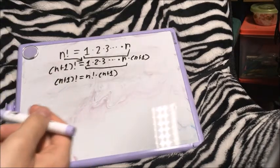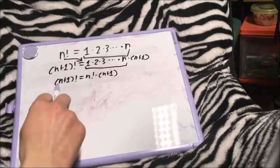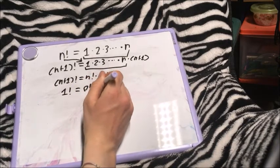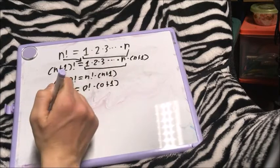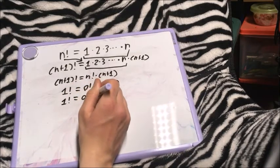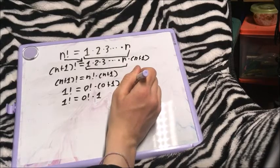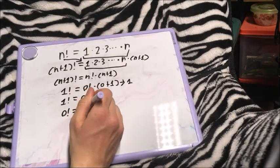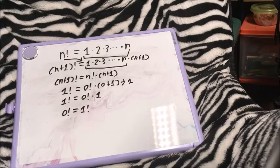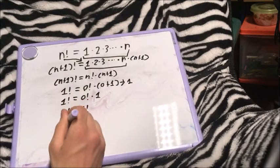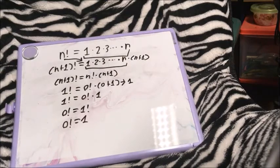To first help with this, we need to establish something important. If we input zero into the recursive formula, we get: 1 factorial equals 0 factorial times (0+1). This simplifies to 1 factorial equals 0 factorial times 1, which simplifies further to 0 factorial equals 1 factorial. Since we know 1 factorial equals 1, we conclude that 0 factorial equals 1. This is the first step to proving that all negative integers are asymptotic in the factorial function.